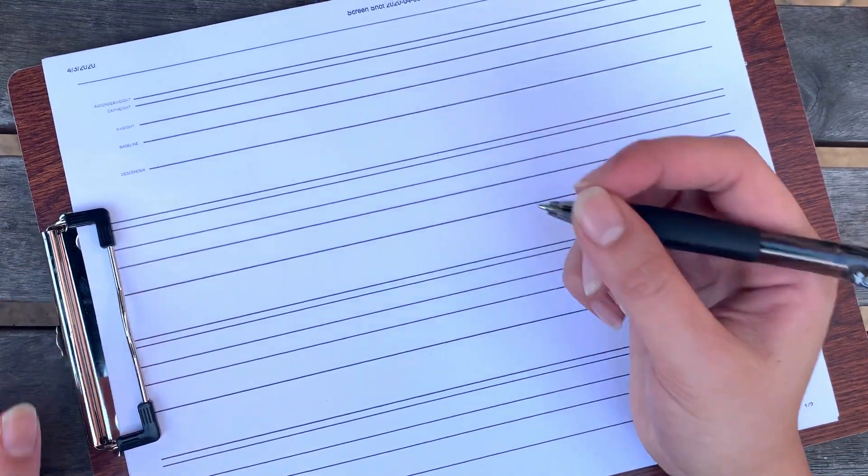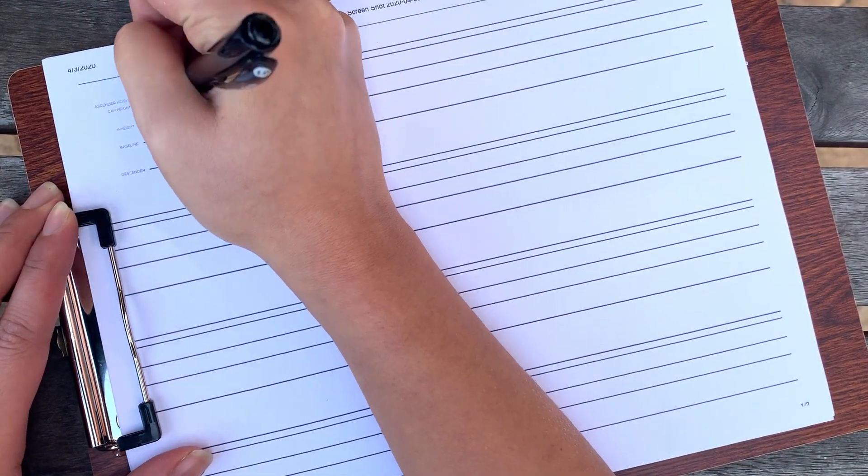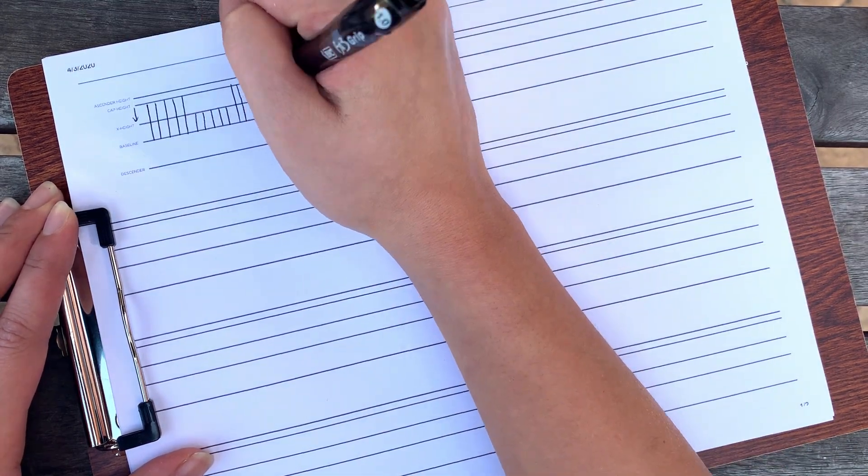We can't just dive into letters right away. Before that, we got to warm up. First, starting off with a vertical line from top to bottom. Alright, now let's go ahead and do the reverse from bottom to top.